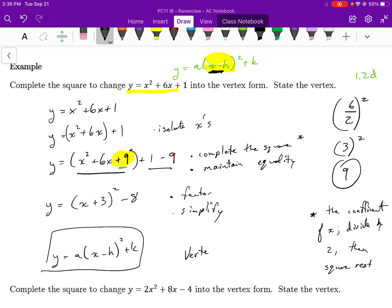The vertex, I have to state the vertex because that was a requirement to the question. The vertex is negative 3, negative 8.